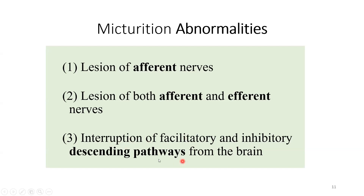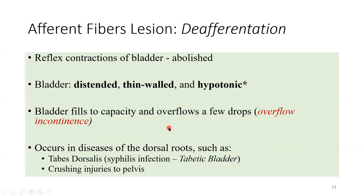Lesion number one is called de-afferentation — selective damage to the afferents only. In syphilis infection, you get what we call a diabetic bladder. Syphilis affects the dorsal root of the spinal cord, which is where sensory information enters through the dorsal horn — the motor output being through the ventral horn. Syphilis is the most famous infective disease that affects the dorsal roots primarily, messing up the sensory afferents of the bladder among other issues.